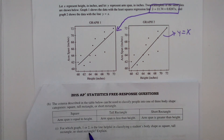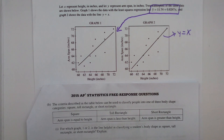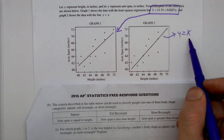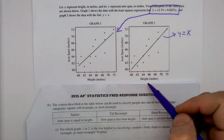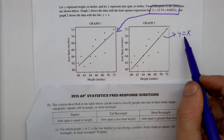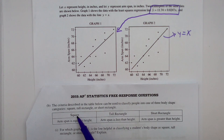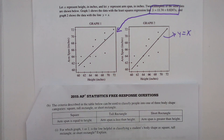For which graph — one or two — is the line helpful in classifying a student's body shape as square, tall rectangle, or short rectangle? The line y equals x, where y is arm span and x is height, is very helpful. If those two things are equal, that person is classified as a square.